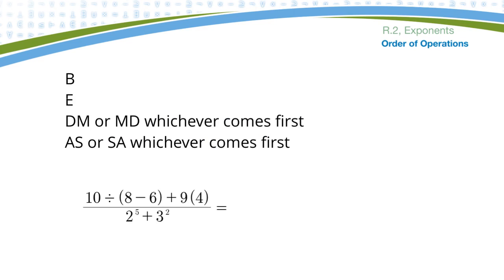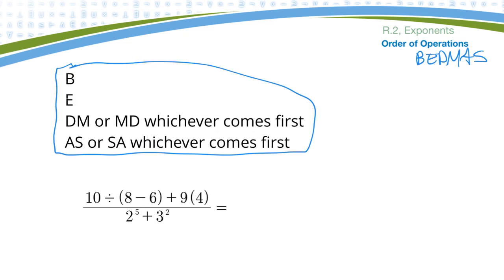The last concept I wanted to look at is order of operations. You may have heard of BEDMAS. A lot of people aren't liking that word anymore because it implies you do division before multiplying and adding before subtracting. But really the rule is you do dividing and multiplying whichever comes first, then add or subtract whichever comes first. The main concept is: brackets come first, then exponents, then either divide or times whichever comes first, then either add or subtract whichever comes first.